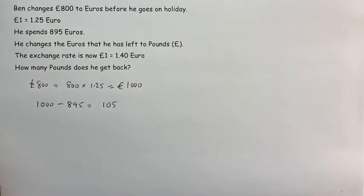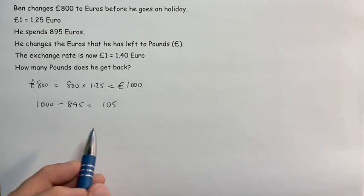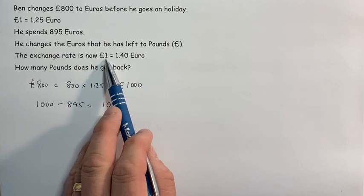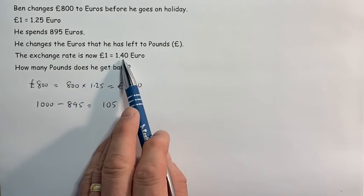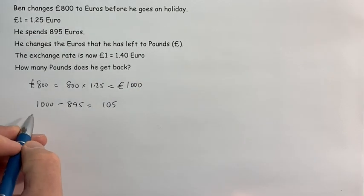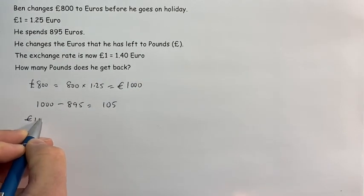On his return, the exchange rate is now that one pound is equal to 1.40 euros. That means that in order to convert the euros he has remaining into pounds, we have to do the opposite of what we did converting our money into theirs.